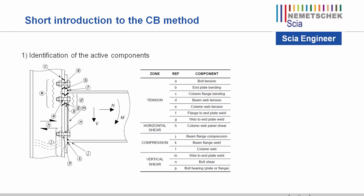The application of the component-based method requires the following steps. First, we identify the active components. Consider the connection with internal forces coming from the loading on the structure. This connection has components that need to resist the effects induced by the loading. The joint is moment-resisting, causing a negative moment at the connection, which implies tension at the top side and compression at the bottom side. You can see this in the figure: component E is the column web in tension at the top side, and component J is the beam flange in compression. Between the top and bottom side you have shear in the column web — component H, column web panel in shear.